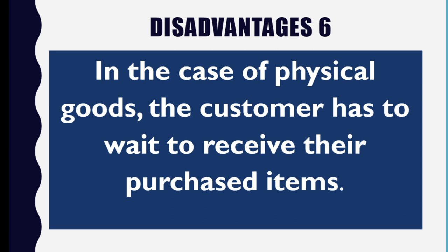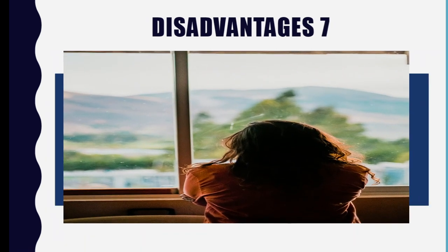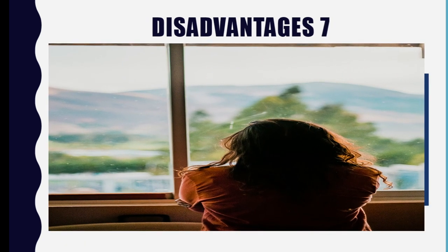Disadvantage number six: in the case of physical goods, the customer has to wait to receive their purchased item. If you have software or non-tangible goods you can get them online immediately, but for tangible or physical goods you have to wait some days as per the delivery timeline given by the company.